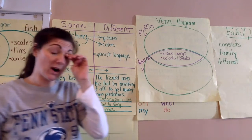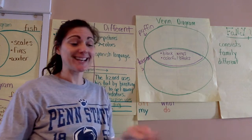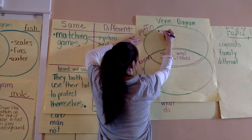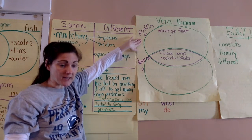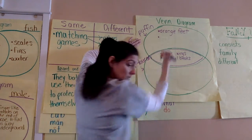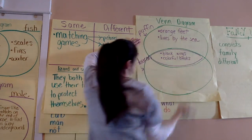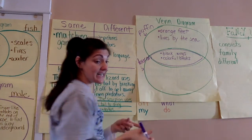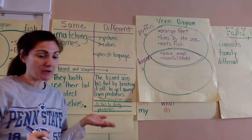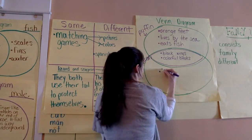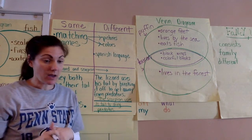There's another sentence in the paragraph that says they're different too, so now we're going into our differences. One bird has orange feet, and then the sentence after it says it is the puffin. So the puffin has orange feet — I'll write that up here. Also, the puffin lives by the sea, so I'll write lives by the sea. And it eats fish, which makes sense — if it lives by the sea it's going to eat fish. The other bird is a toucan. The toucan lives in the forest and the toucan also eats fruit.